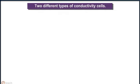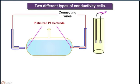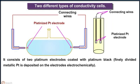Two different types of conductivity cell. This conductivity cell, shown in the above diagram, consists of two platinum electrodes coated with platinum black, i.e., finely divided metallic platinum deposited on the electrodes electrochemically.